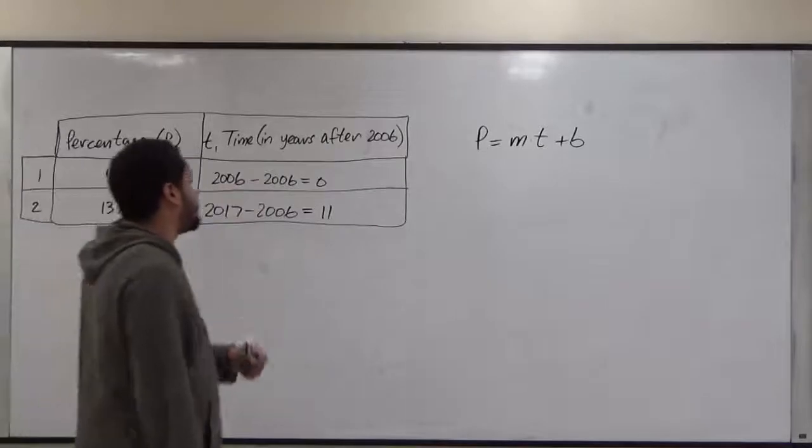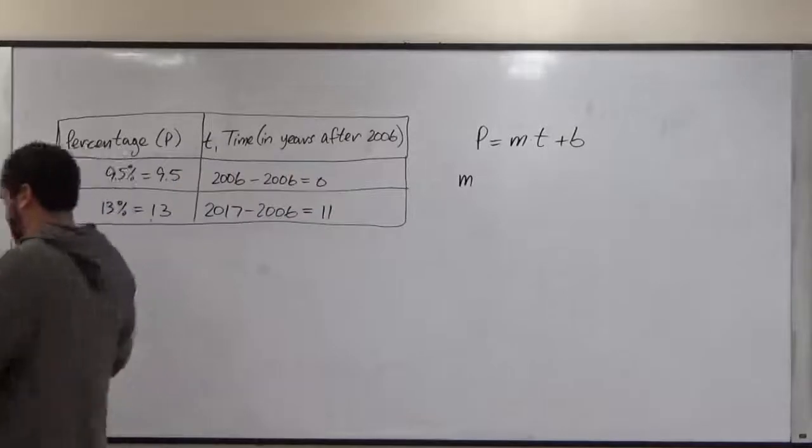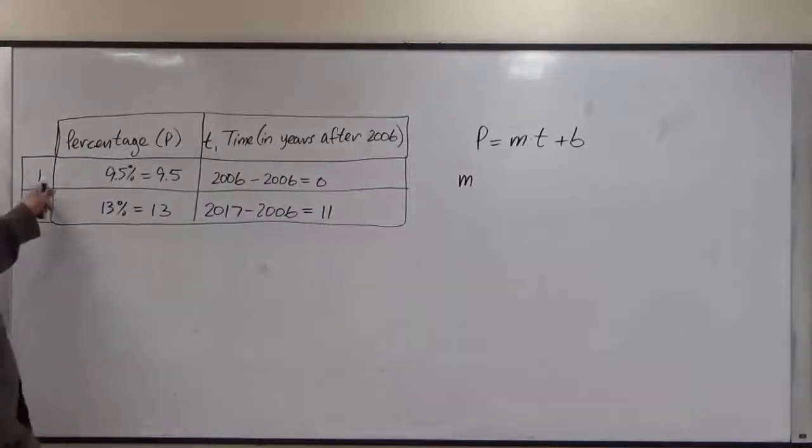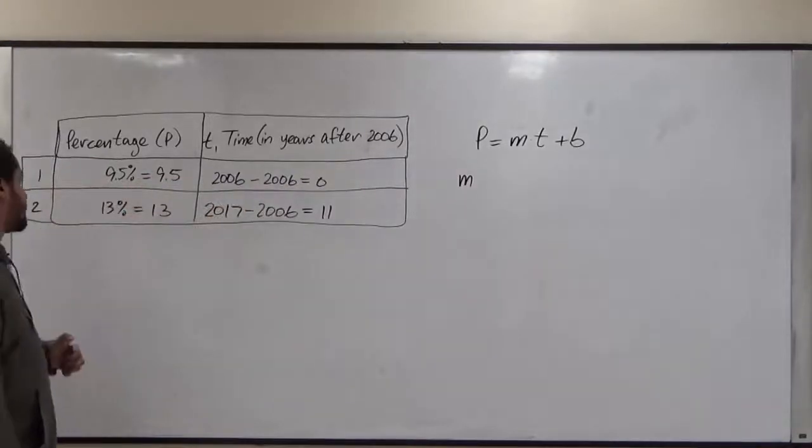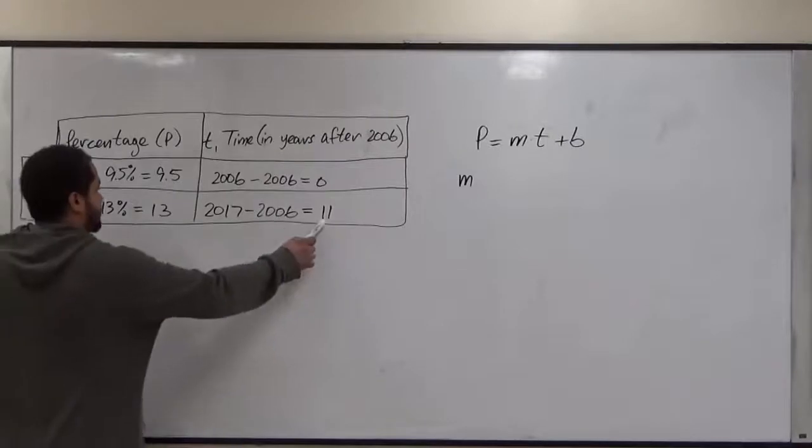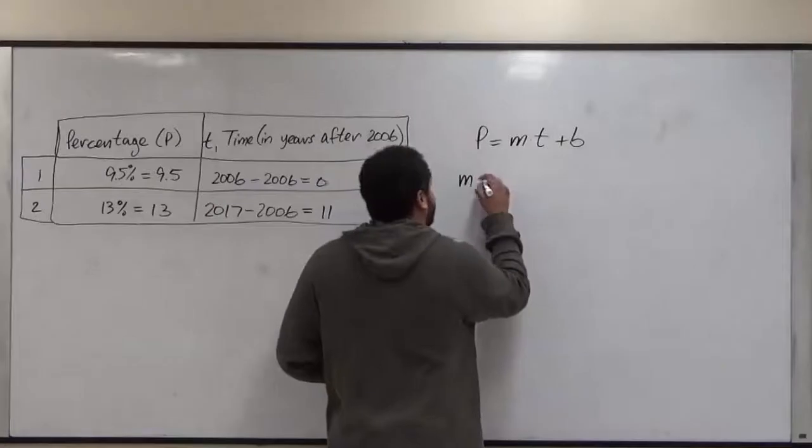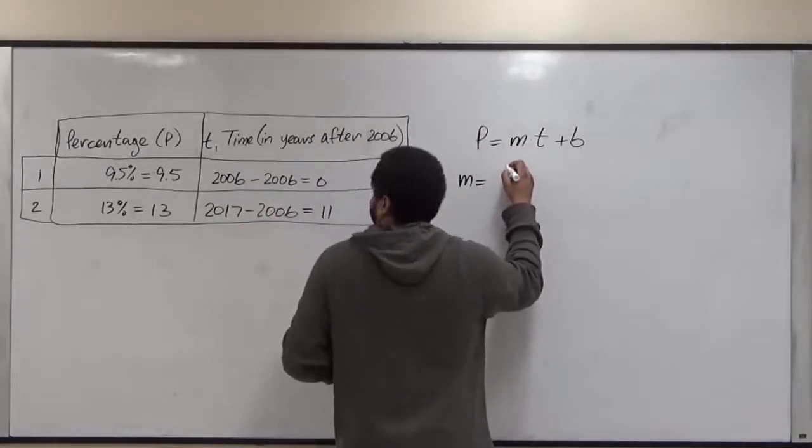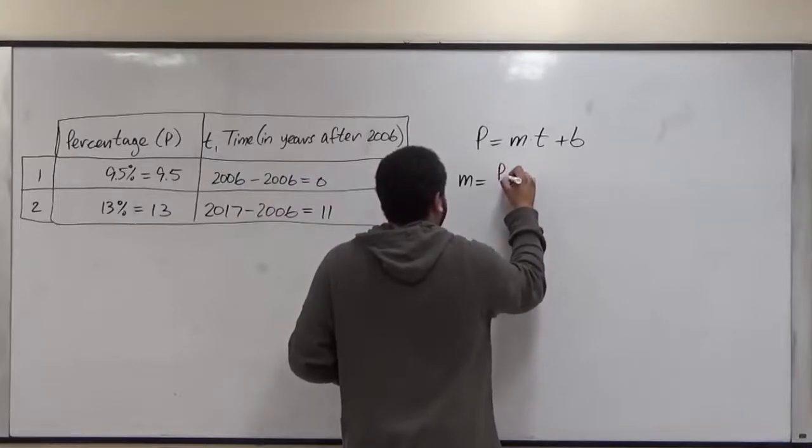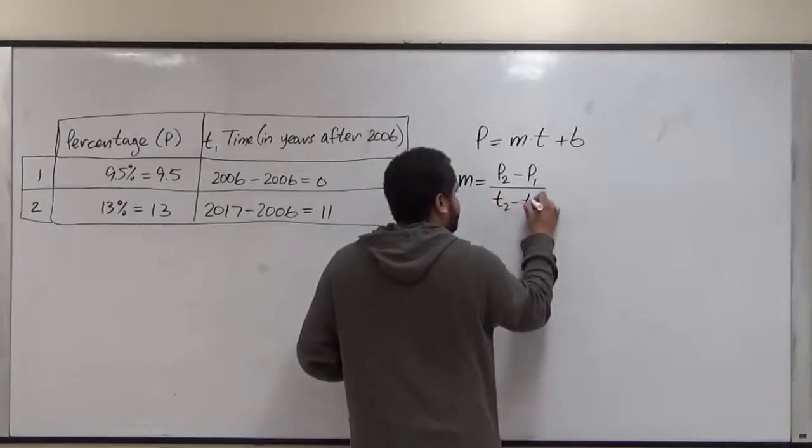To get our slope value, our m, we're going to calculate our differences. Here on the left side I have one and two because the one represents the year 2006, where T is zero and the percentage is 9.5. And the second coordinate point will be T equals 11 and the P equals 13. We're going to do a difference just like we would with the equations for x and y on a linear equation line.